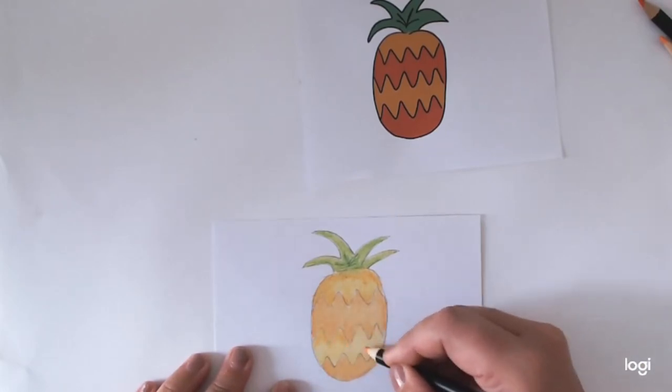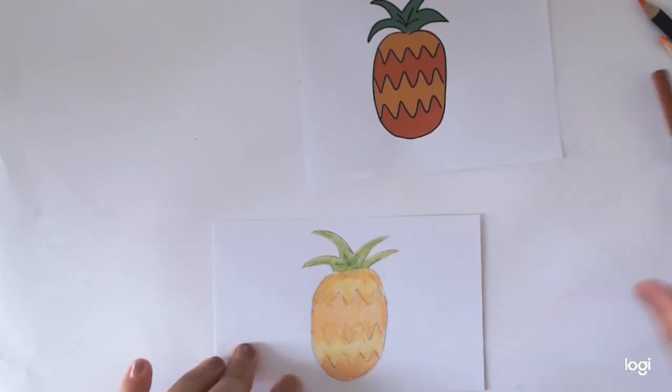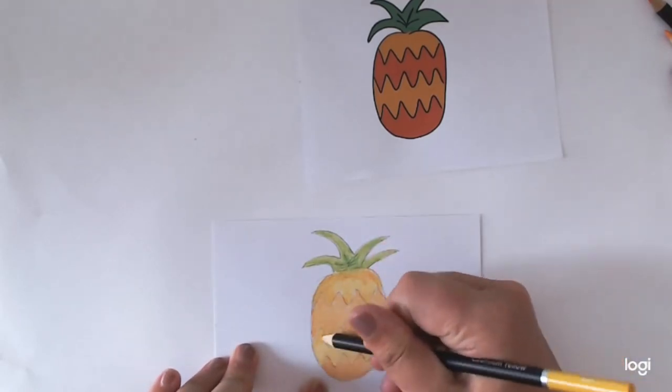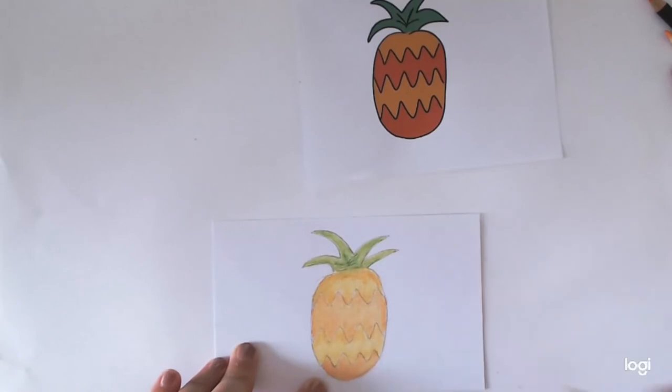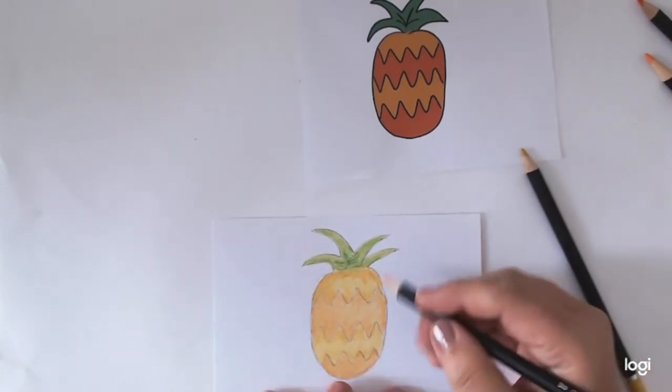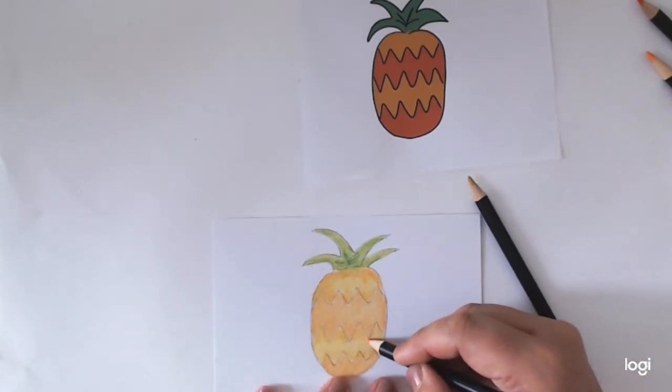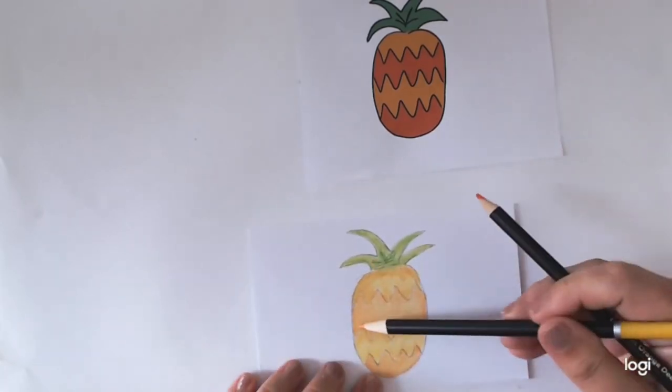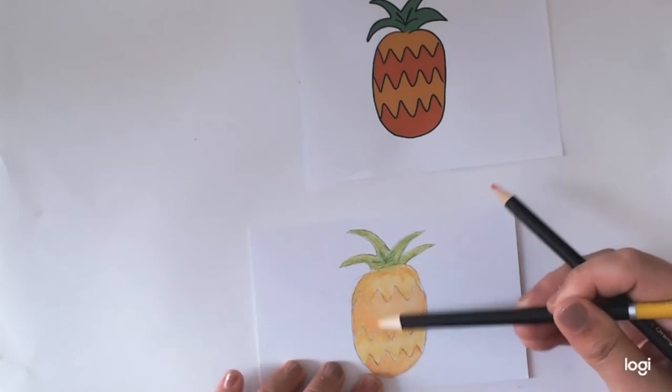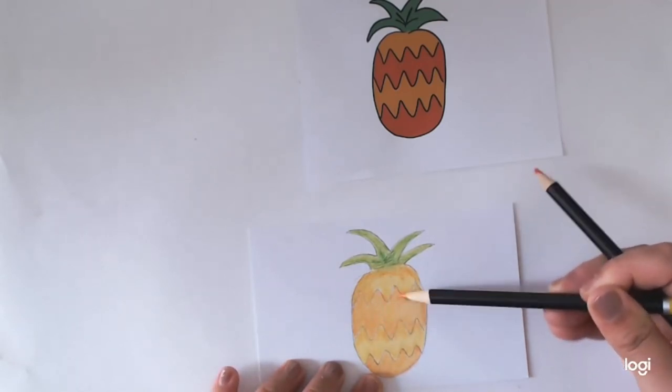Then I'm going to come down here and just do the same, a little bit darker there. We kind of want the different sections to mix into each other. Now I'm going to go into this next one, the darker orange.